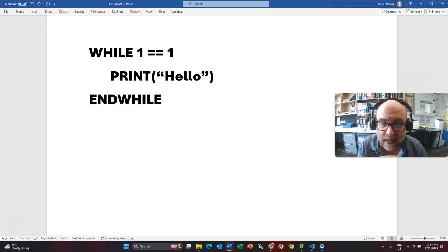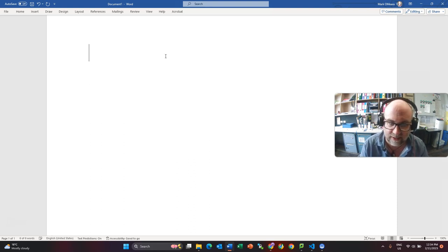Then that would just say hello forever and ever. It would be stuck inside that loop infinitely because 1 is always going to equal 1. And you'll notice that we're using the double equals there to mean does it equal. But let's look at a somewhat more realistic way of doing this.